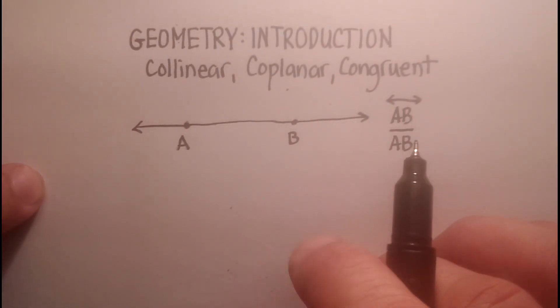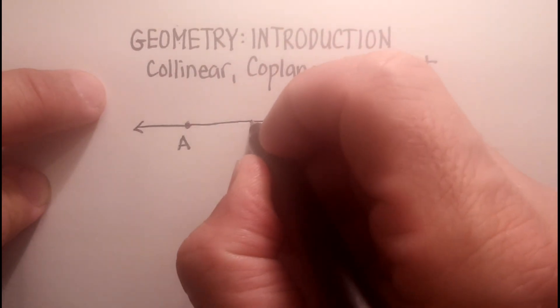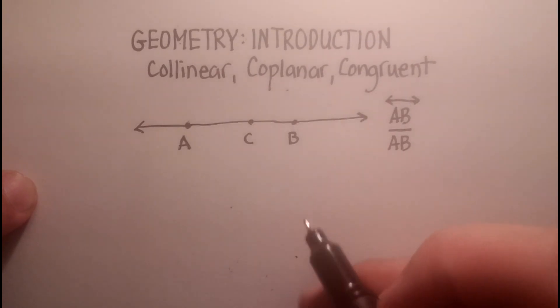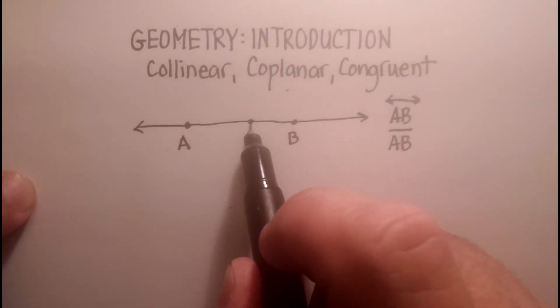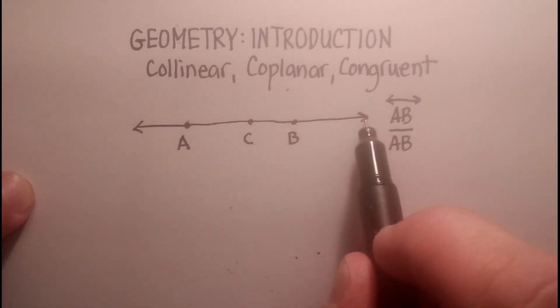But let's get back to the point collinear, and let's put another point on there. Let's call that point C. Now, our points A, B, and C are collinear because they lie on the same line.